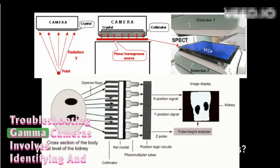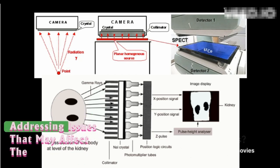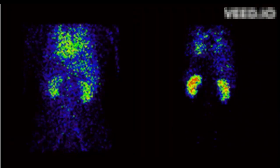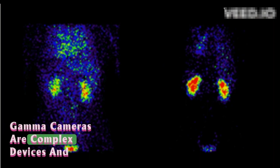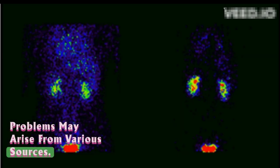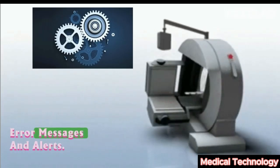Troubleshooting gamma cameras involves identifying and addressing issues that may affect the performance of the imaging system. Gamma cameras are complex devices and problems may arise from various sources. Here are common troubleshooting steps.